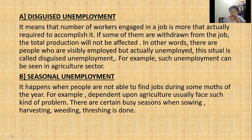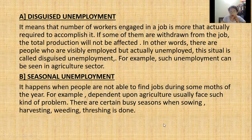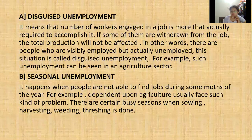Disguised unemployment is a situation where the number of people employed in a job is more than optimally required. For example, suppose in a piece of land one worker is producing 5,000 kg. Later on, two members of his family joined him, but still there is no effect on the production — it's still 5,000 kg. Those two persons who joined later are called disguisedly unemployed persons. It seems that they are employed, but actually they are not. They are disguisedly unemployed, and this type of situation can be seen in the agriculture sector.